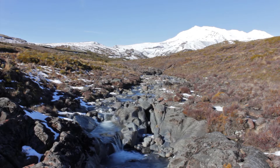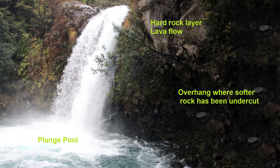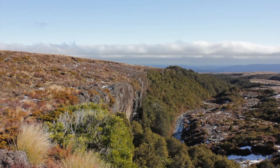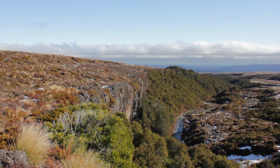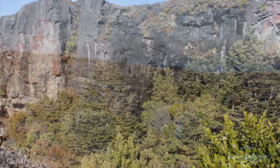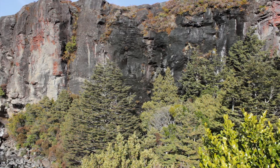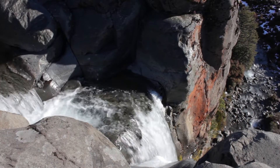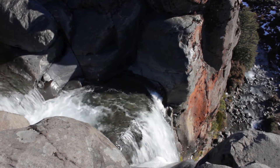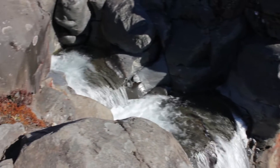Waterfalls usually form in the upper reaches of the river where a layer of hard rock overlies a layer of soft rock. An example of this is where there has been a lava flow over softer rock layers. Lava is about 7 out of a possible 10 on the Mohs scale of hardness. Since lava is a hard rock, it is more resistant to water erosion.